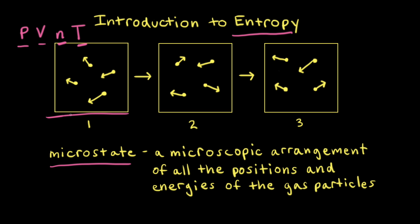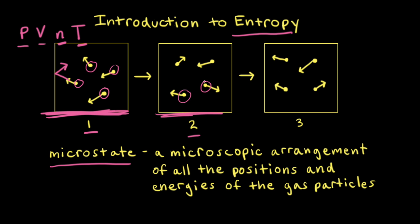However, from a microscopic point of view, things are changing all of the time. Looking at our gas particles in the first box, imagine these gas particles slamming into the sides of the container, maybe slamming into each other and transferring energy from one particle to another. If we think about the particles in our system at one moment in time in box one, and then at a different moment in time in box two, the particles might be in slightly different positions and the velocities might have changed.